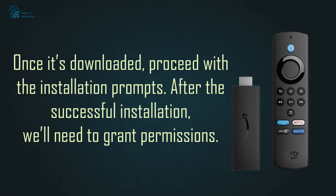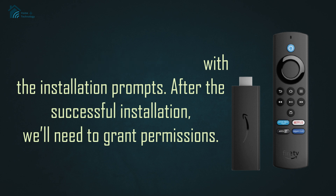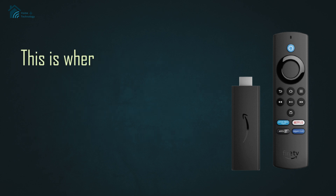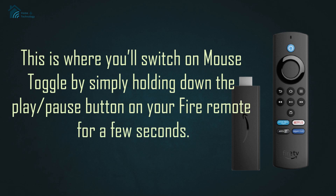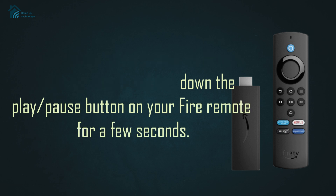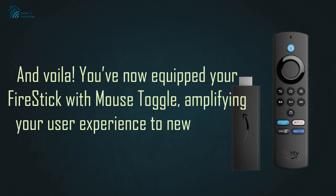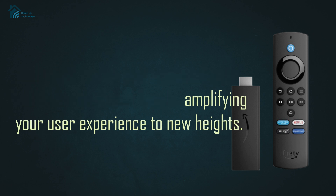After the successful installation, we'll need to grant permissions. This is where you'll switch on mouse toggle by simply holding down the play/pause button on your Fire remote for a few seconds. And voila! You've now equipped your Fire Stick with mouse toggle, amplifying your user experience to new heights.